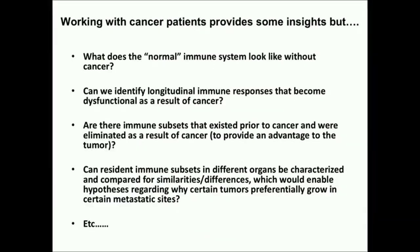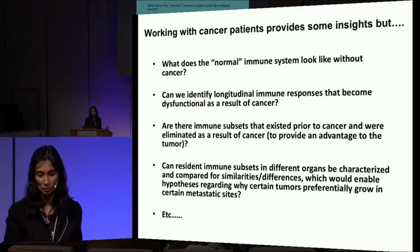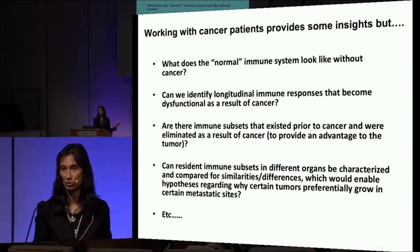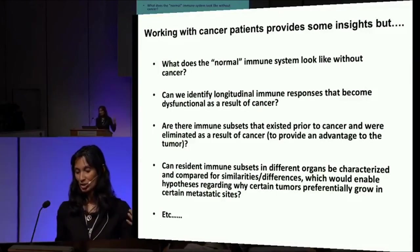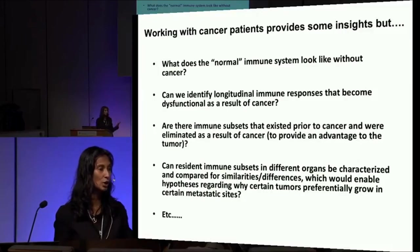Working with cancer patients provides insights about what can be done in the immunotherapy setting. But for the Human Cell Atlas, we need to understand what the normal immune system looks like without cancer — I'm dealing with patients who've had cancer for many years, so I don't really understand what these subsets are truly supposed to be like. Can we identify longitudinal immune responses that become dysfunctional as a result of cancer? Are there immune subsets that existed prior to cancer and were eliminated as a result of it, giving the tumor an advantage? If we understand those eliminated subsets, we can figure out ways to reconstitute them, even with adoptive cell therapy.